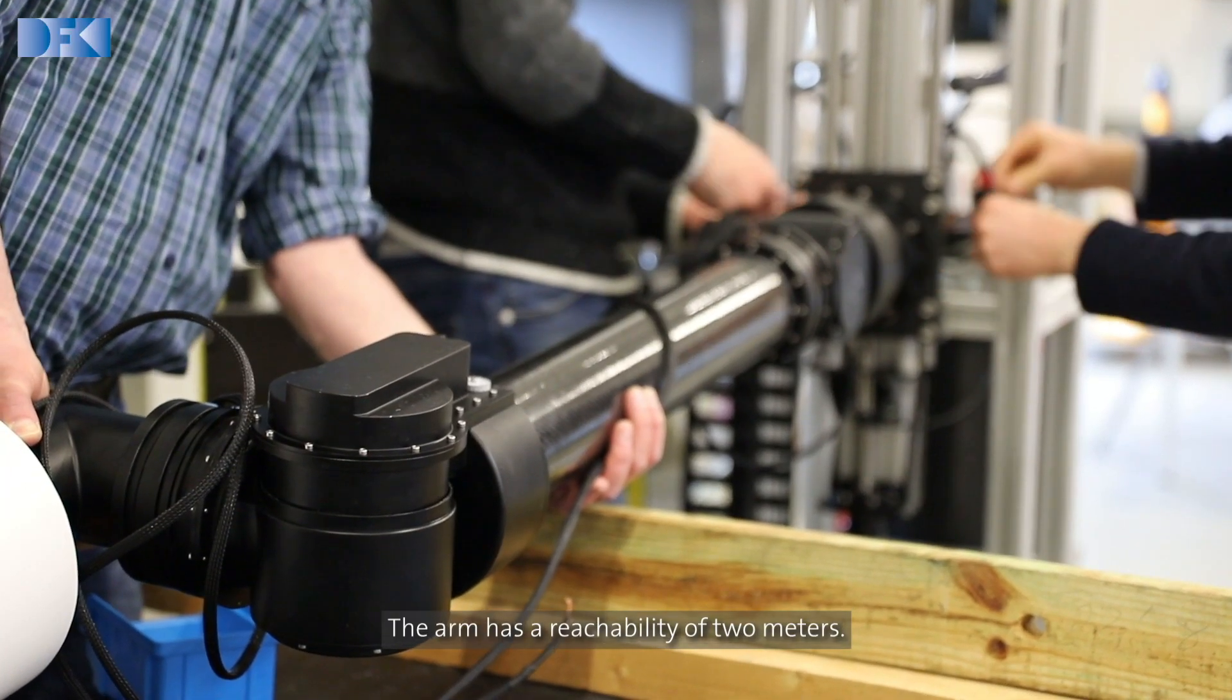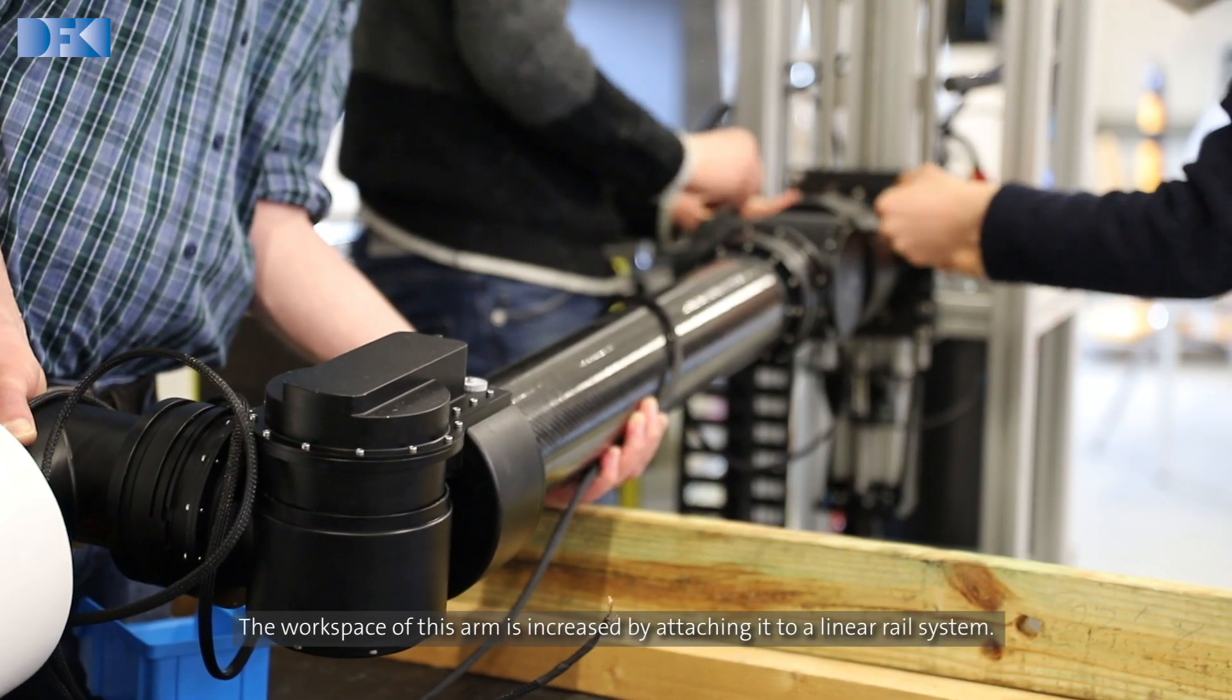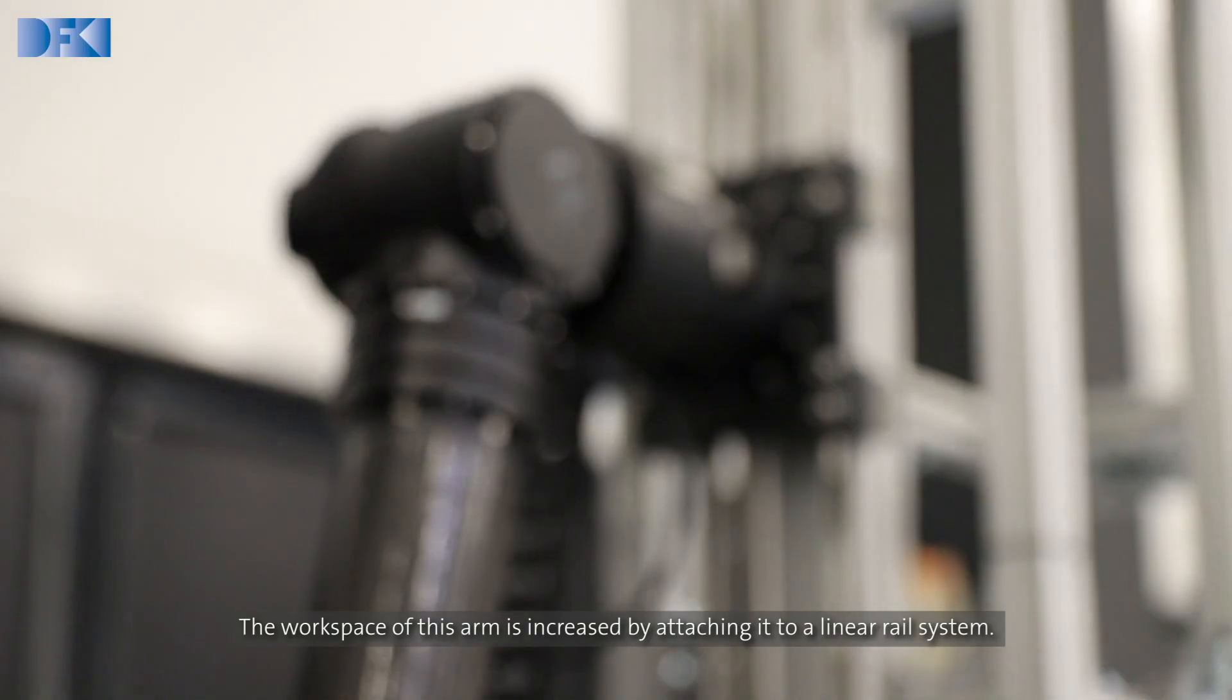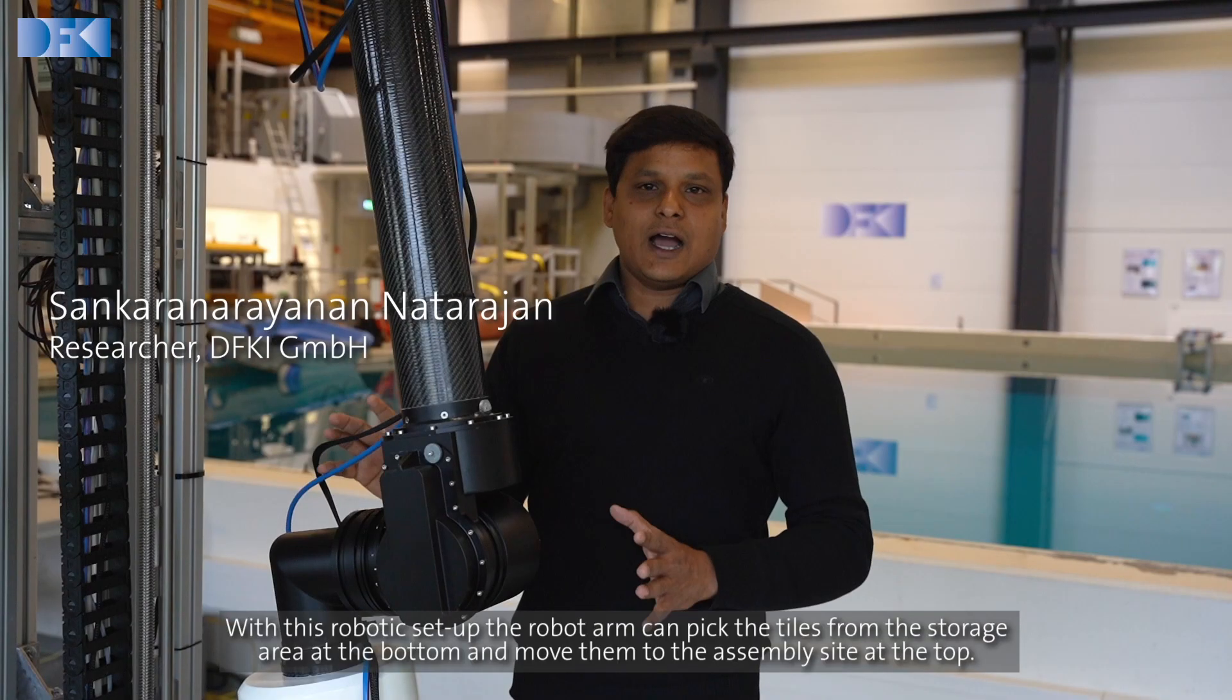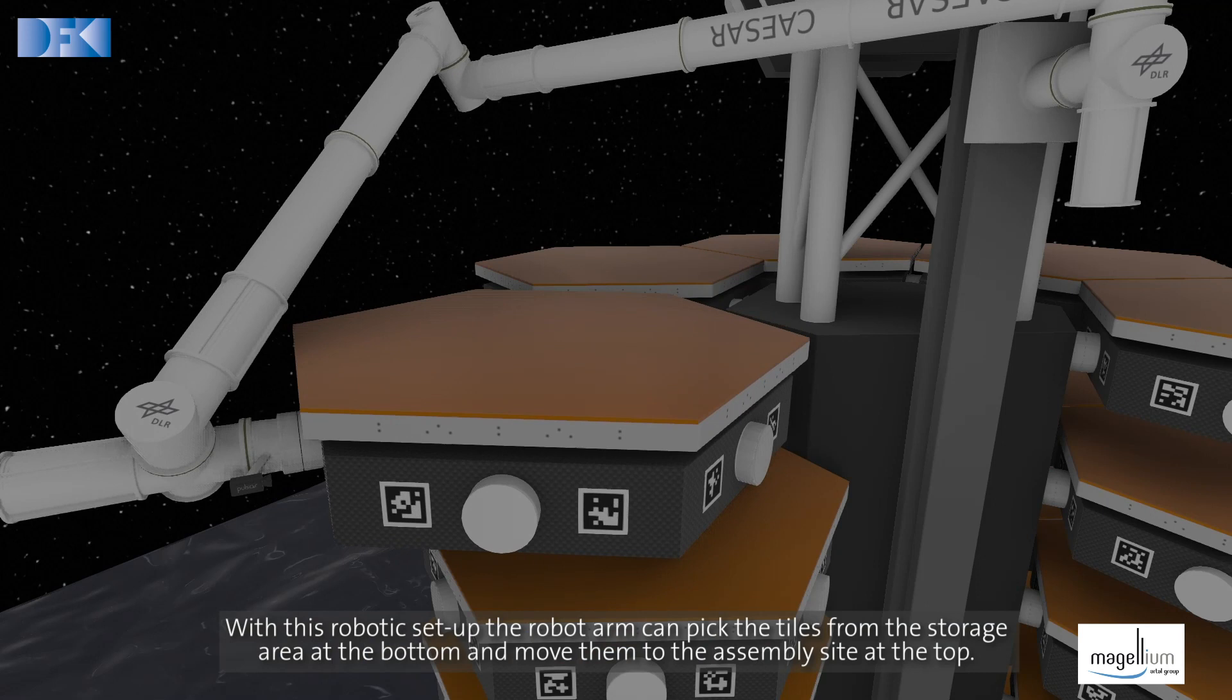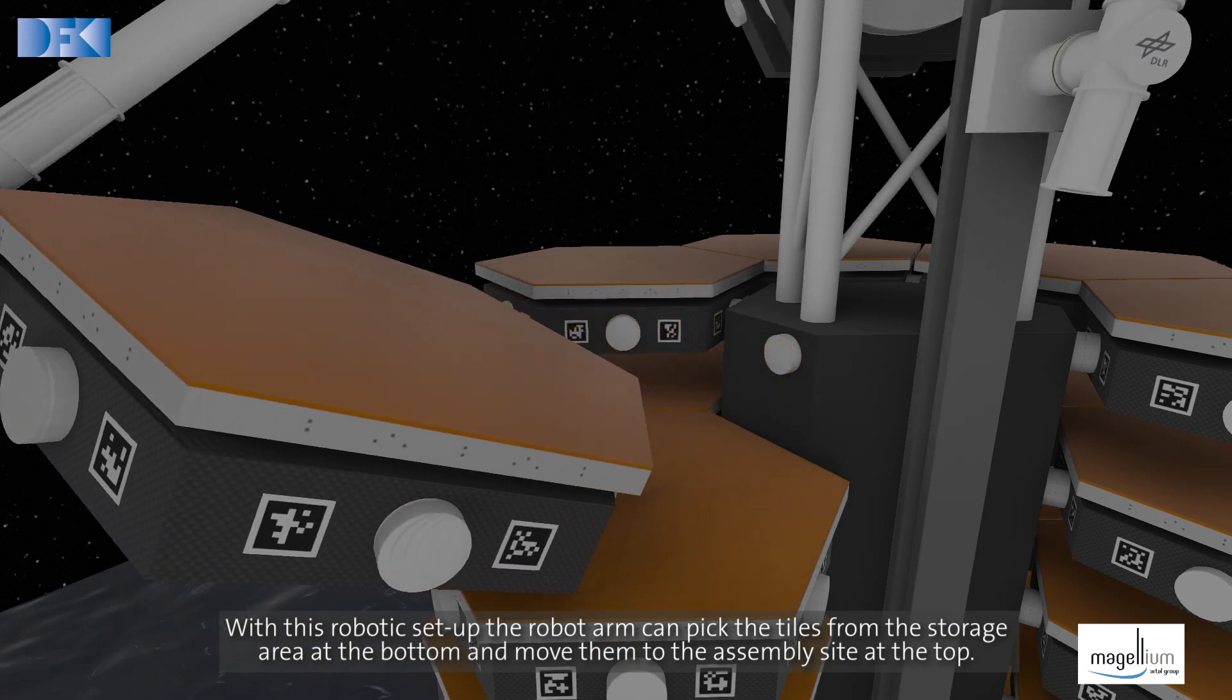The arm has a reachability of two meters. The workspace of this arm is increased by attaching it to a linear rail system. With this robotic setup, the robot arm can pick the tiles from the storage area at the bottom and move them to the assembly side at the top.